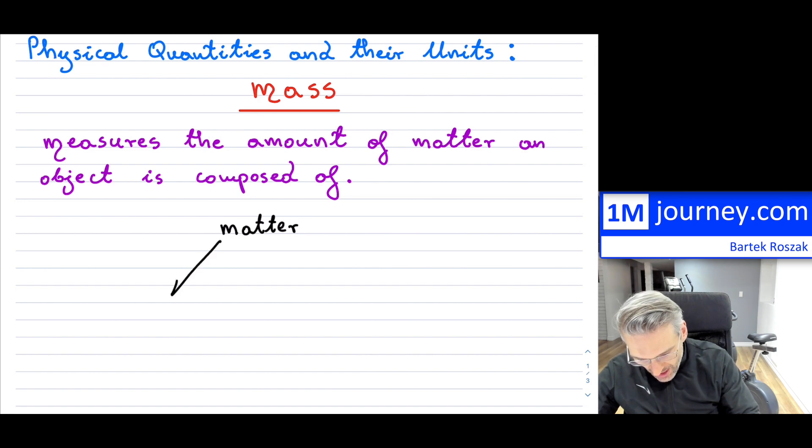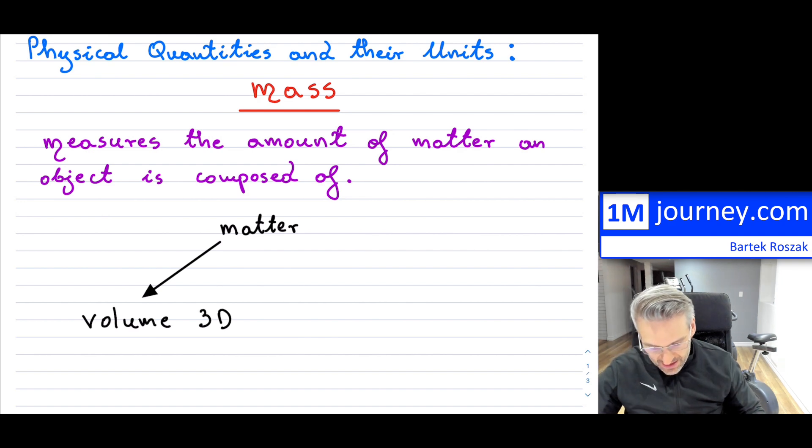for us in physics, we don't have to break it down into a huge amount of details. However, what we like to say is that matter is basically anything that occupies volume, which is three-dimensional in some way.